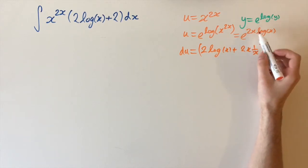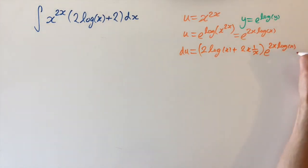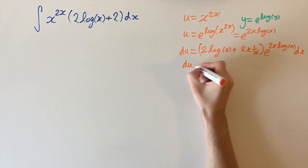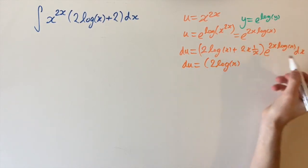we still have the original function because the derivative of the exponential is itself, so we have e to the 2x log of x, and we also need a factor of dx. Now we can simplify: du equals 2 log of x plus 2, since the x and 1 over x cancel.